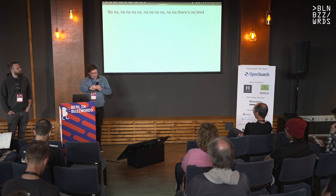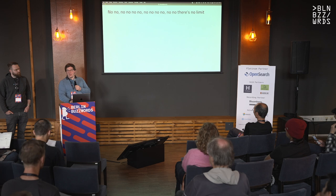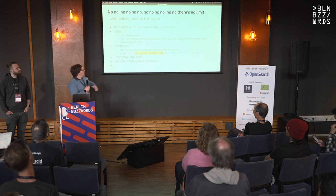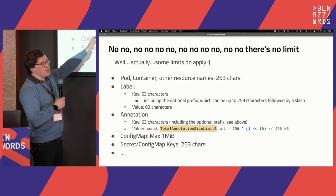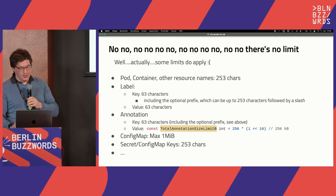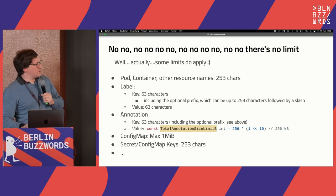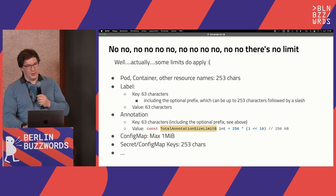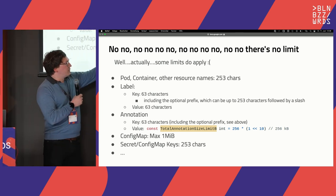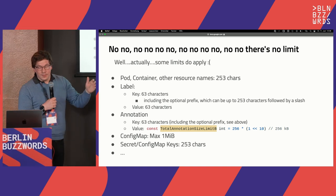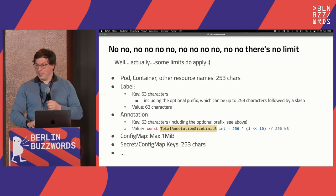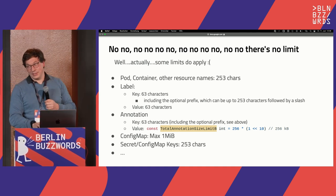Some limits apply that are sometimes not documented - like how long a name can be, which characters are allowed, and so on. An annotation value can be 256 kilobytes in size, which is fine, but it's only documented in code. Things have to be valid DNS names with restricted character sets. These are things we learned the hard way.